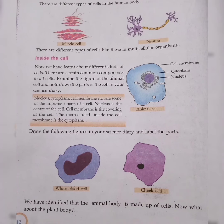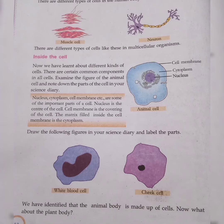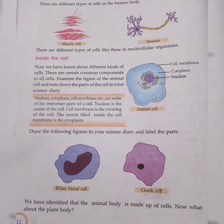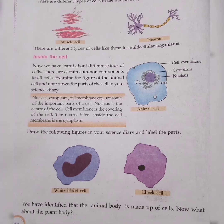Note down the parts of the cell in your science theory notebook. Here we have an animal cell. The outer membrane is the cell membrane. The important parts of a cell are the nucleus, cytoplasm, and cell membrane.